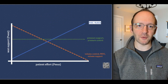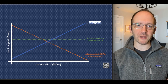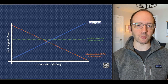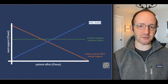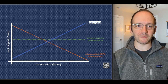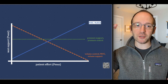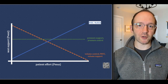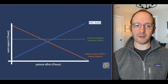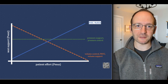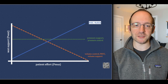How does servo targeting compare to other modes? As patient effort or PMUS increases, vent support or PVENT also increases proportionally — that's where the name proportional assist comes from. Contrast this to commonly used modes like volume control, volume support, or PRVC, where the more effort the patient gives, the less support they get from the ventilator. With pressure support or pressure control, the amount of support provided does not vary at all based on patient effort.